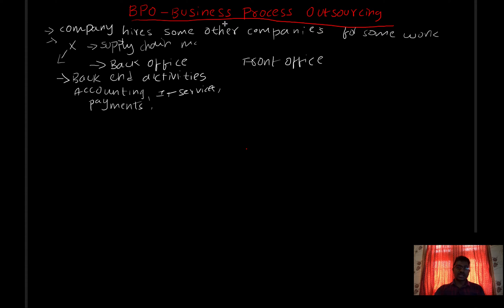For example, if you have a TV manufacturing company and you don't know accounting, you can outsource that accounting-related work to another company. You can contact that company and outsource it. This is back-office outsourcing.